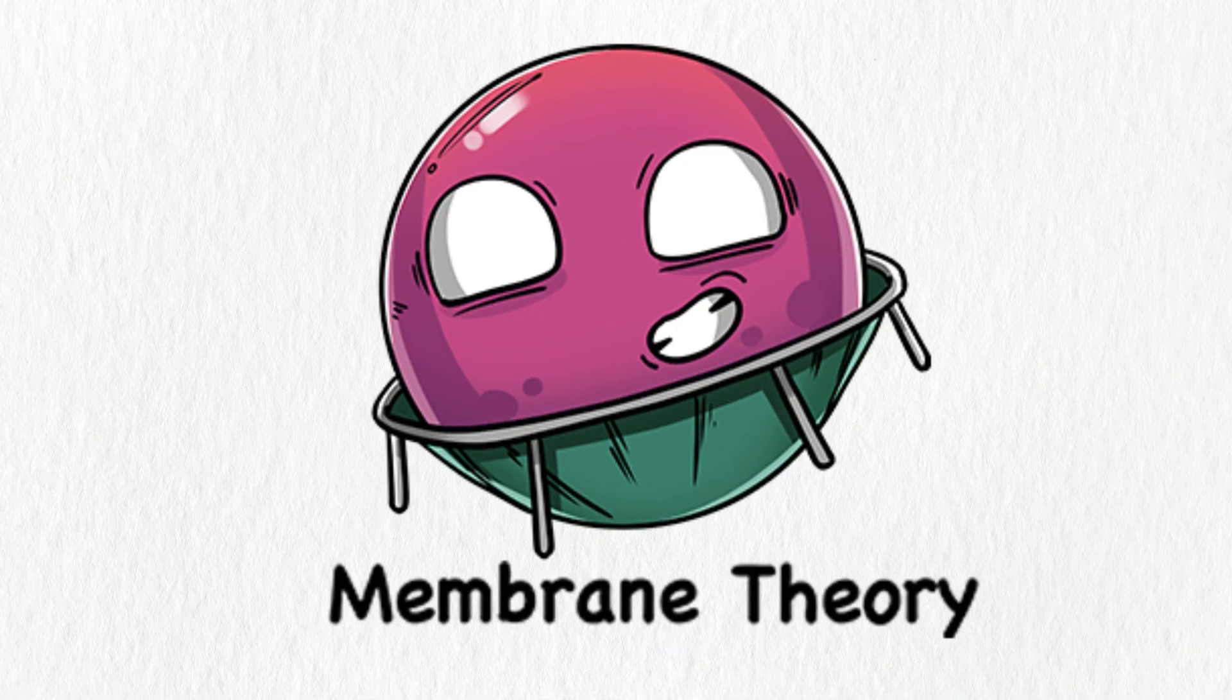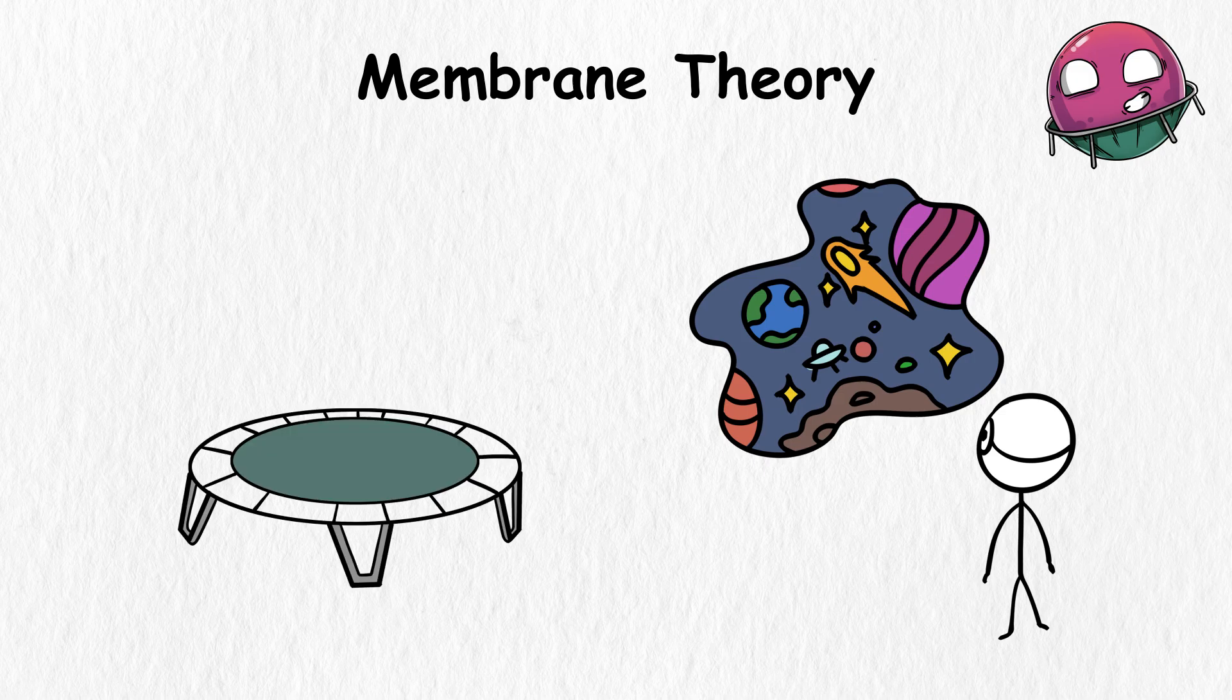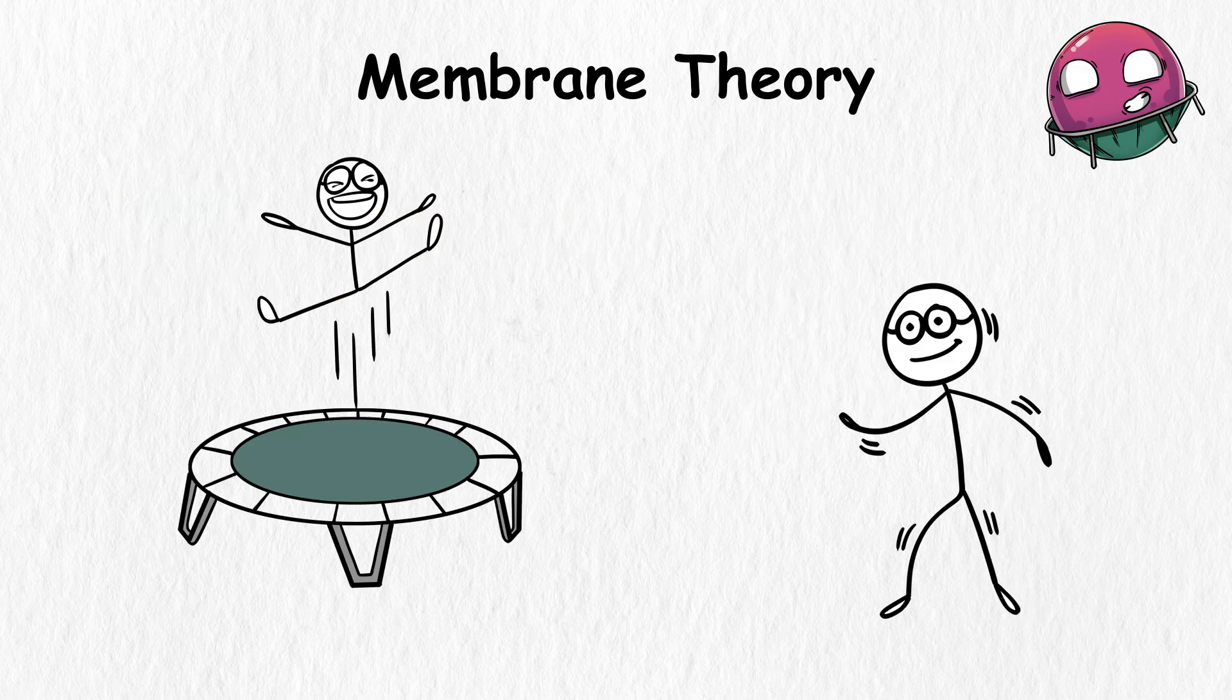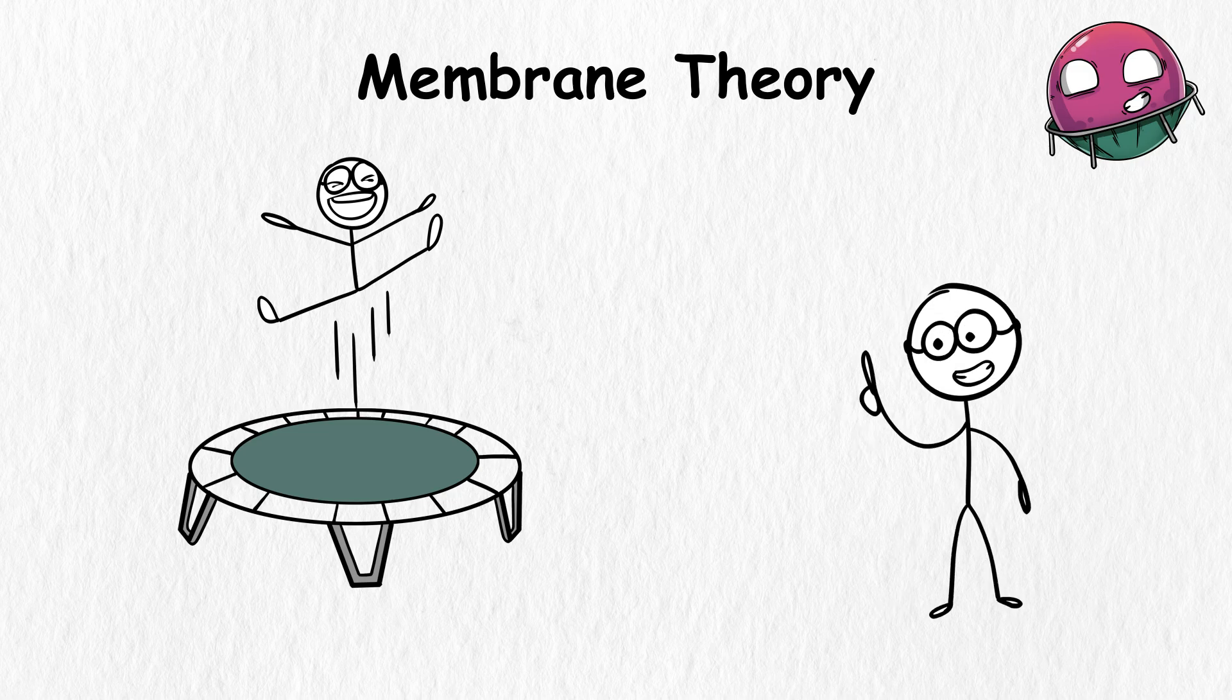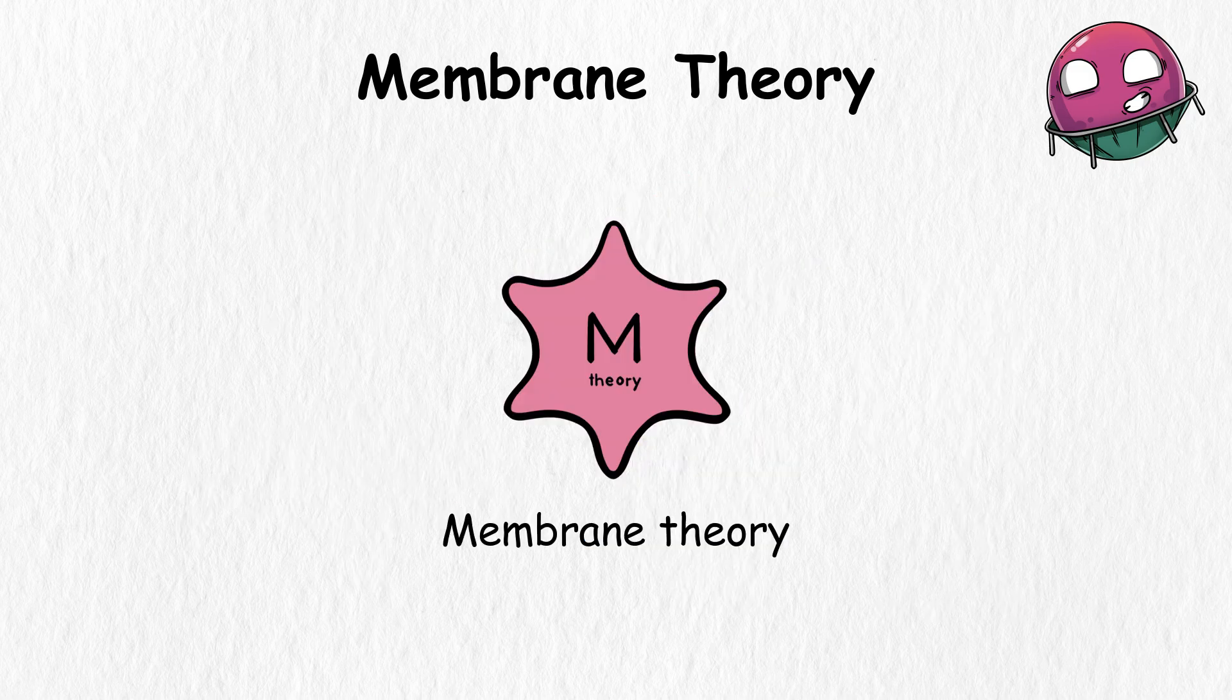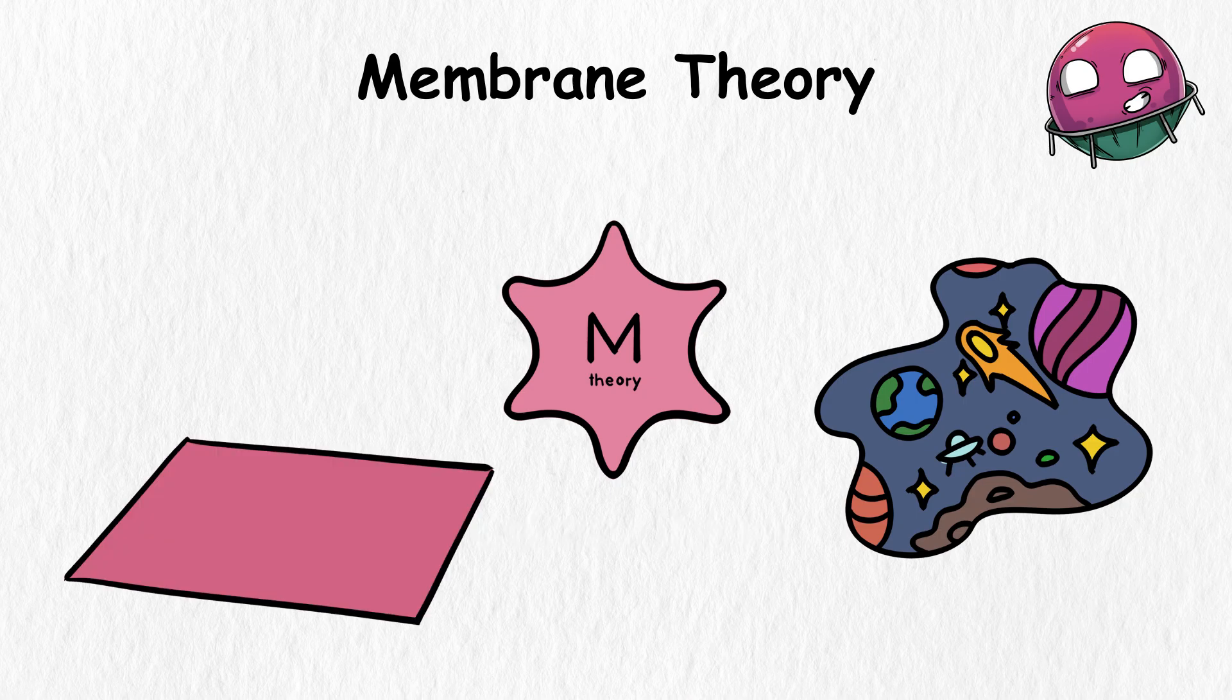Membrane Theory Brane Multiverse. Look at the universe as a trampoline or a giant sheet called a brane. Every jump or movement on this trampoline affects it, which explains why the sheet moves as we bounce. This theory, known as Membrane Theory, suggests that our universe is just one of these branes existing in a larger realm called the bulk.